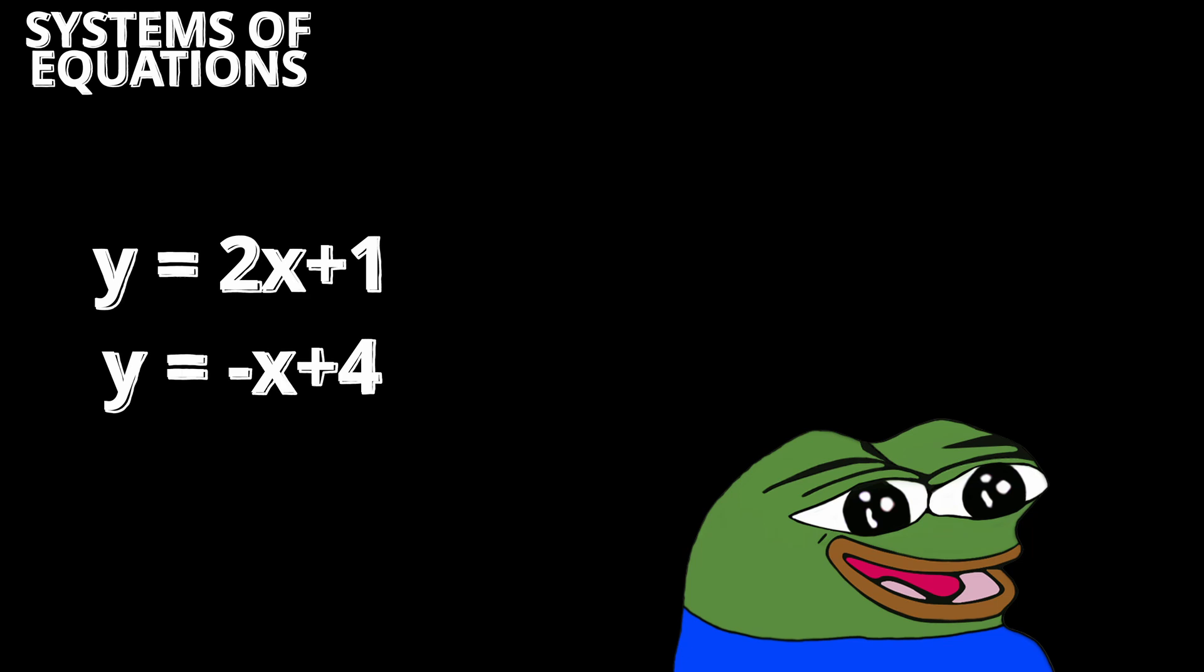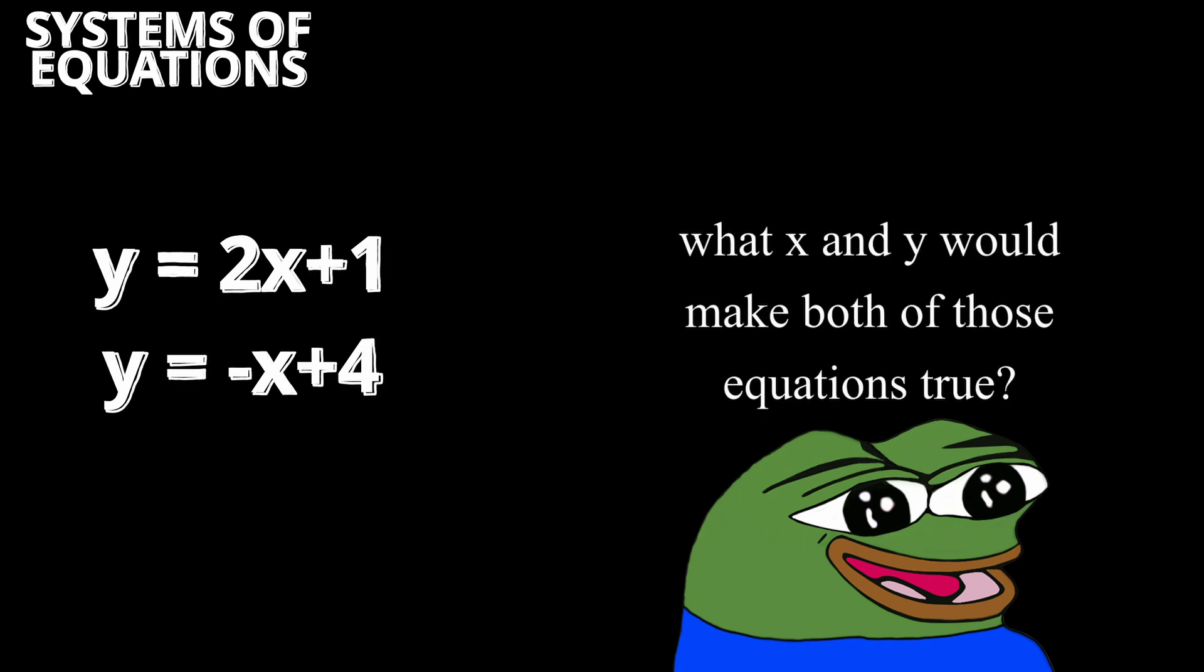For example, we have y is equal to 2x plus 1 as our first equation, and y is equal to negative x plus 4 as our second equation. We want to find the x and y values that satisfy both of these equations.